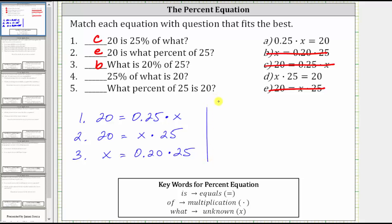For number four, we have '25% of what is 20.' We first have 25%, which we express as a decimal, which is 0.25. And then of means multiplication, so times what represents the unknown. We write the variable x. Is means equals, and then we have 20. The percent equation for '25% of what is 20' is 0.25 times x equals 20, which is equation A.